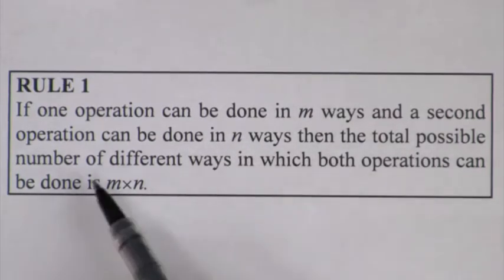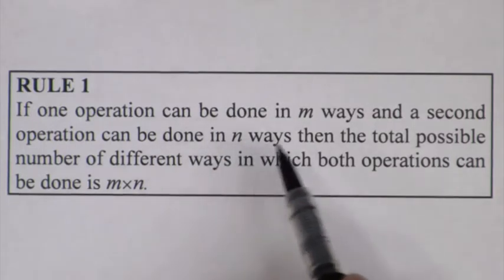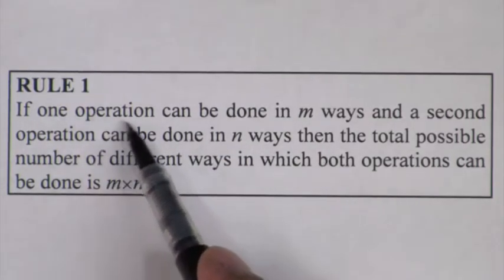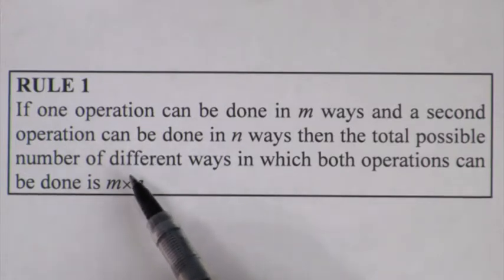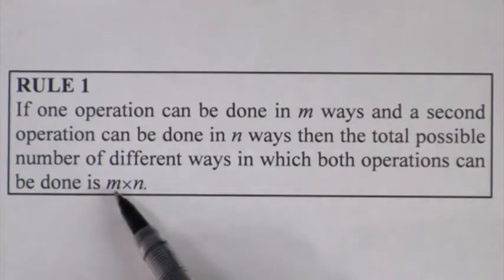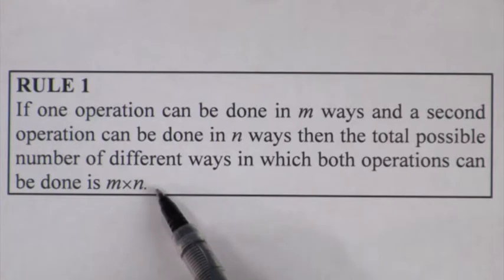Then the total number of different ways these two tasks, or what we refer to in this definition as operations, can be done is M times N different ways.